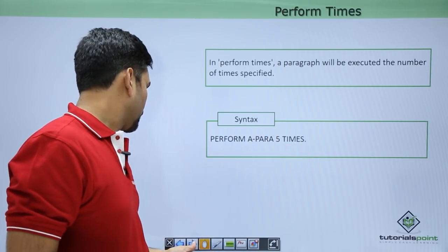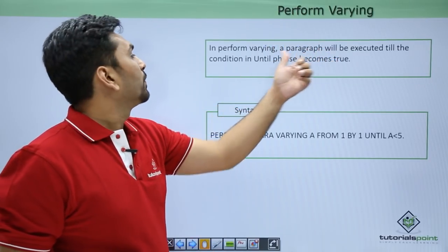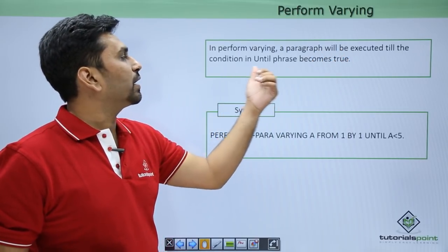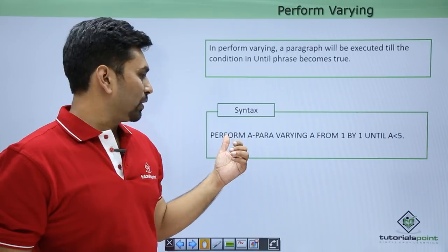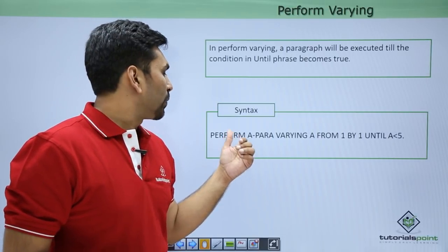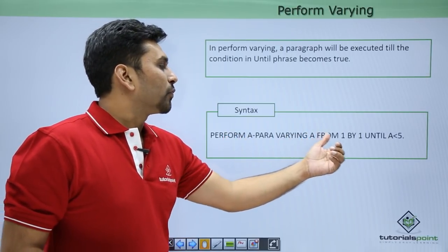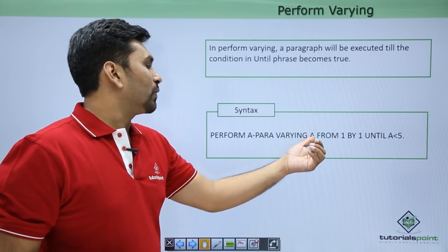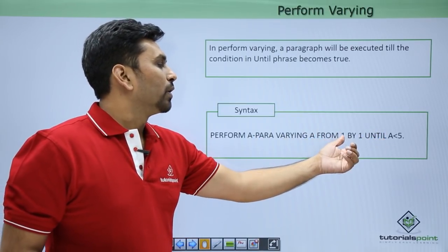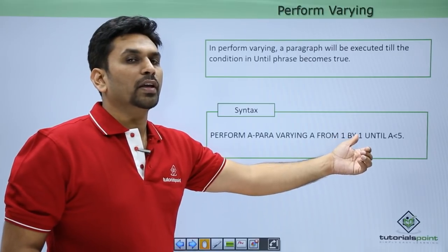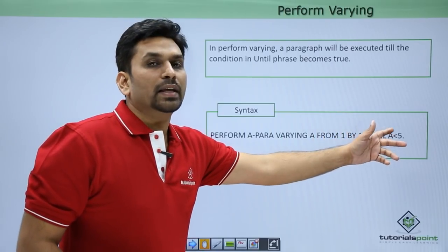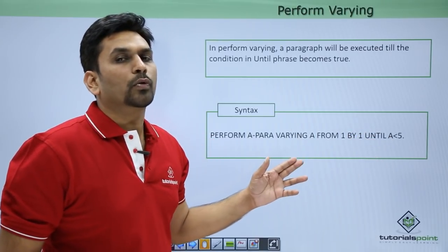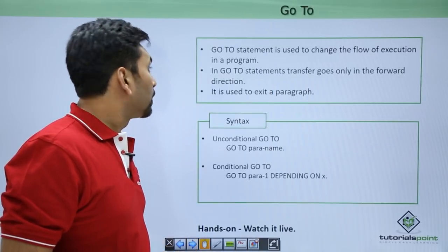In PERFORM VARYING, a paragraph will be executed until the condition in the UNTIL phrase becomes true. The syntax is: PERFORM A-PARA VARYING A FROM 1 BY 1 UNTIL A IS LESS THAN 5. It sets the value of A to 1, then increases A by 1 each iteration. Once the condition is true, control comes out of the loop.